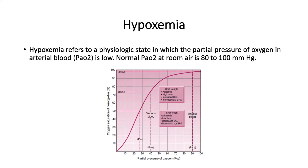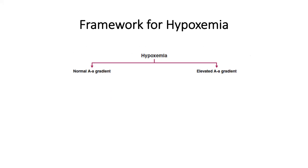We remember the hemoglobin saturation curve: on the x-axis is the partial pressure of oxygen in arterial blood, on the y-axis is percent hemoglobin saturated. As PaO2 goes up, so does saturation, but it's not linear — it's an S-shaped curve. The numbers I commit to memory: 27 mmHg corresponds to 50% saturation, and 60 mmHg corresponds to around 90%. Let's begin to build our framework for hypoxemia.